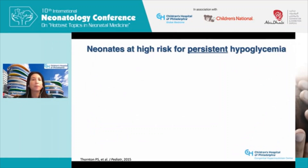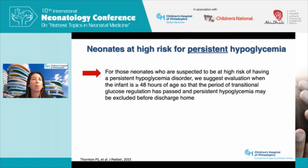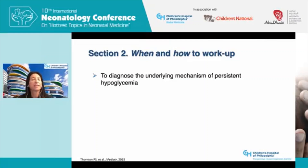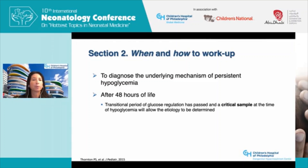In this group of neonates at high risk for persistent hypoglycemia, the committee recommended evaluation when the infant is greater than 48 hours of age, so that the period of transitional glucose regulation has passed and a persistent hypoglycemia disorder may be excluded before discharging the baby home. The purpose of this evaluation is to diagnose the underlying mechanism of persistent hypoglycemia.